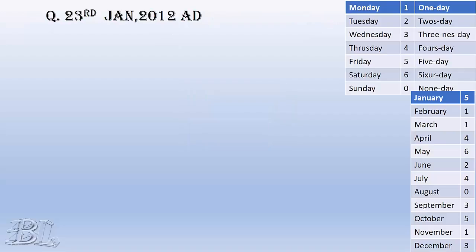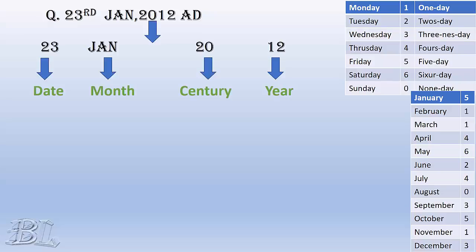Let's write a random date: 23rd of January, 2012 AD. Let's name these values as date, month, century, and year. Remember, when I say year, I mean 12 only, not 2012 as a whole.